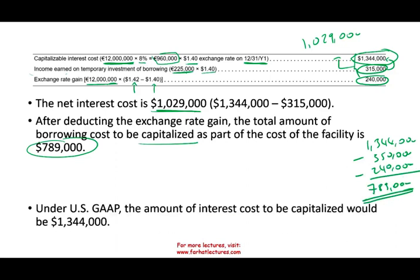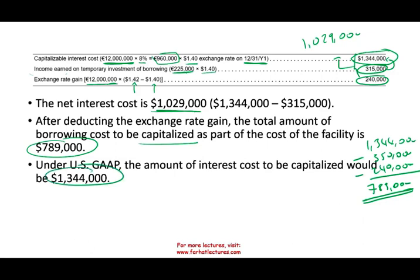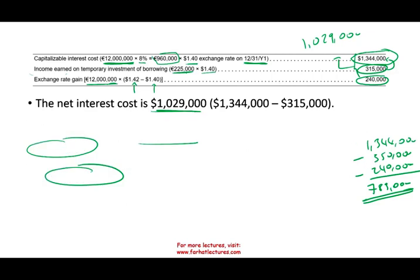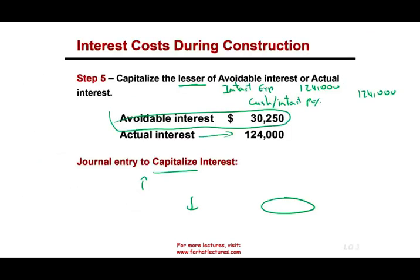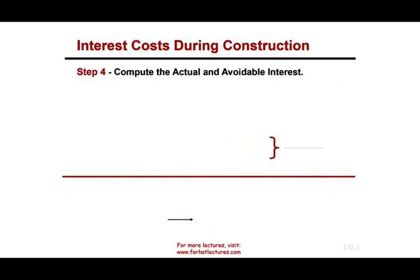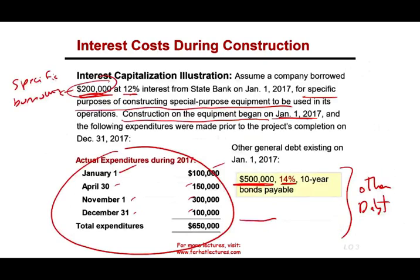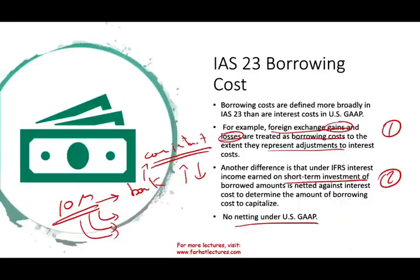Notice the difference from US GAAP — under US GAAP we would have capitalized $1,344,000. I hope this session helped explain borrowing cost under IAS 23. If you have any questions or comments, please email me. Please visit my website for additional lectures and CPA program offers. Good luck and study hard.